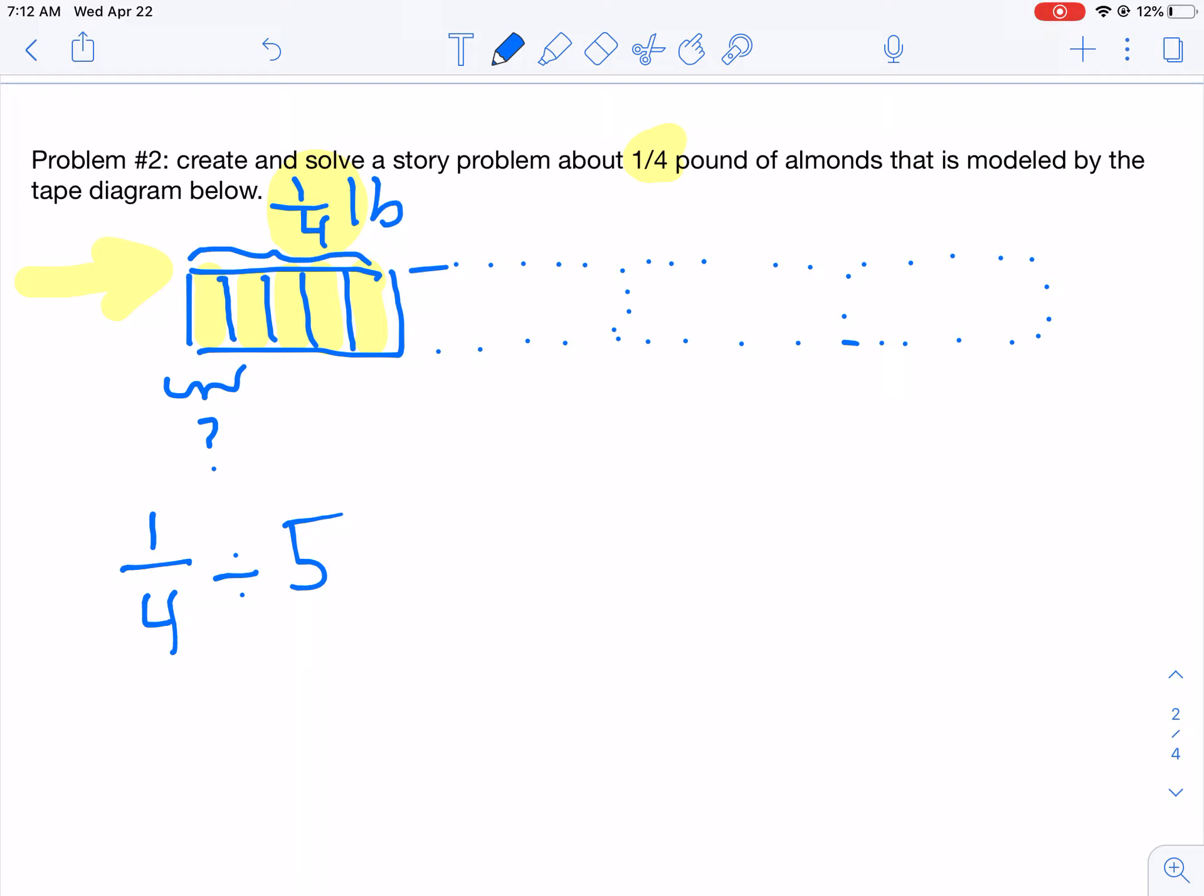I noticed that some of you were thinking about multiplication here. What multiplication expression would also give us the part that has the question mark? This is the same thing as one-fourth times one-fifth. Good. So you can use either one of these expressions to solve.